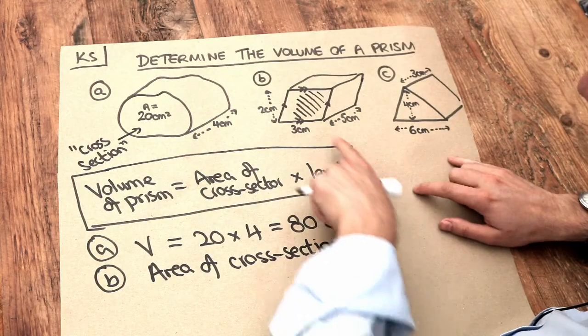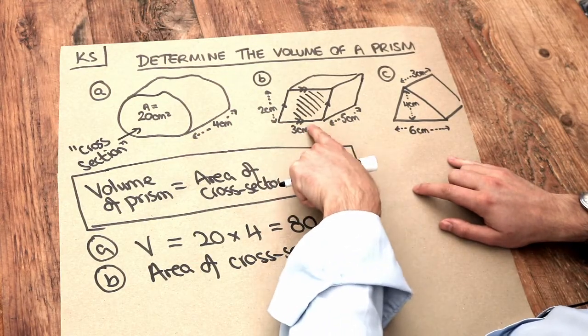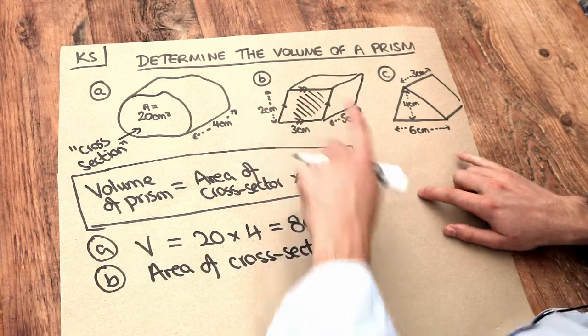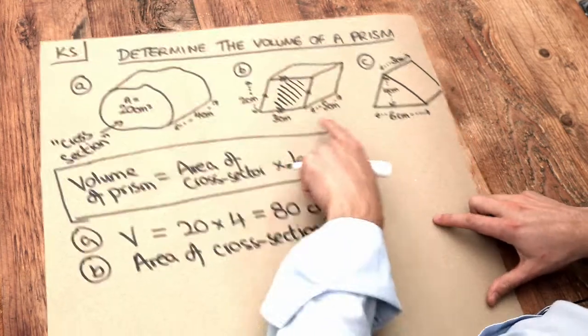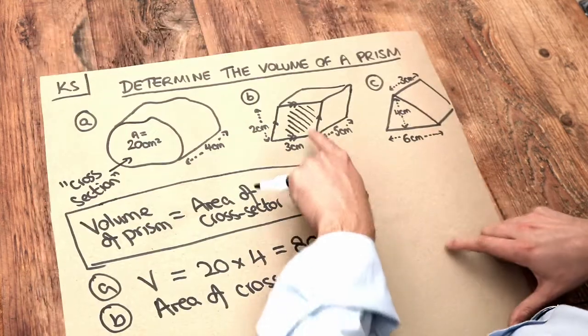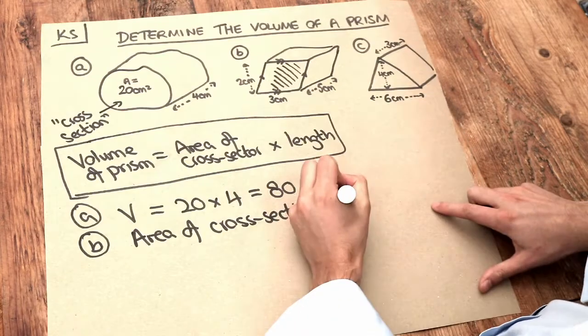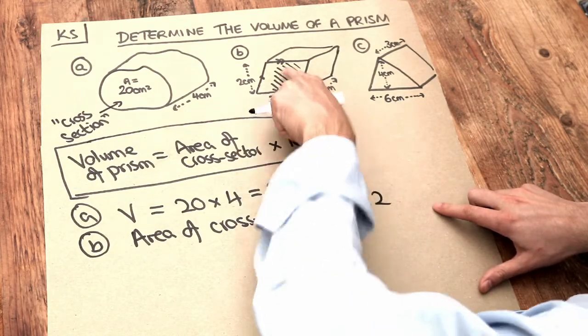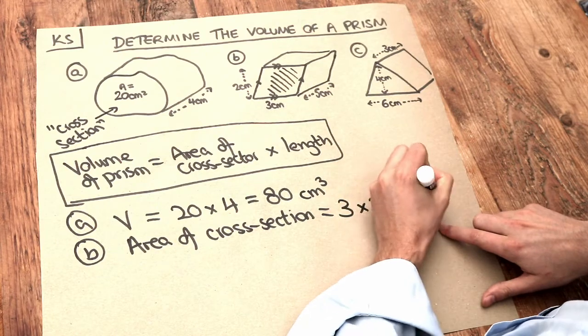Remember we can just simply do the base of the parallelogram times it by the perpendicular height. We explore this in a different video and that will give you the area. So we just do 3 times 2 and that will be the area of that front shaded shape. That's 6 centimetres squared.